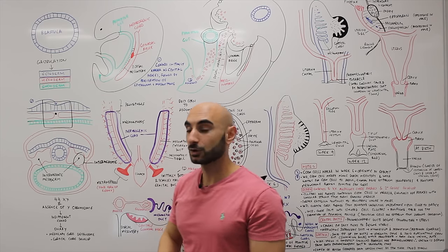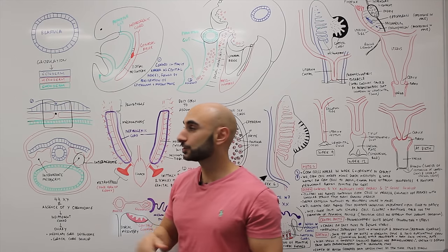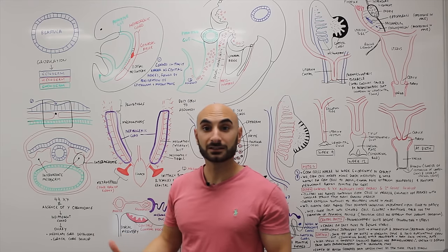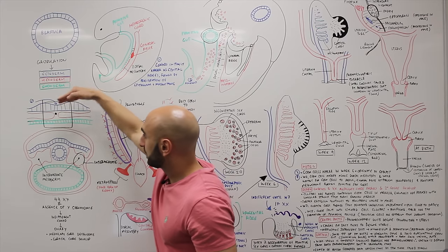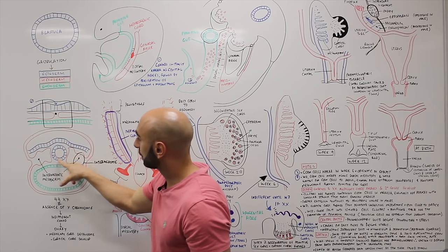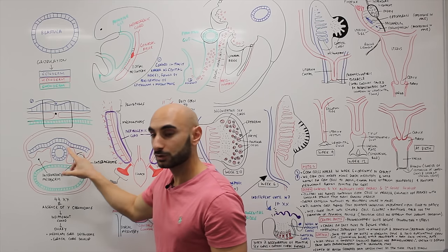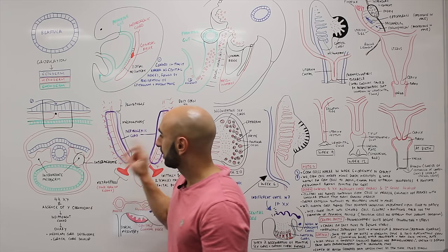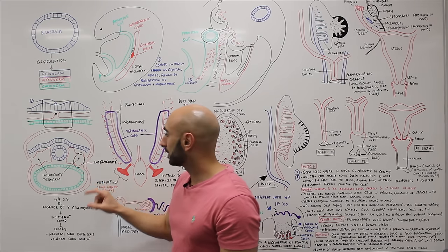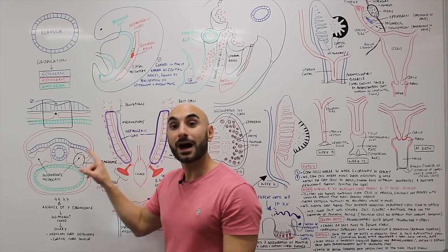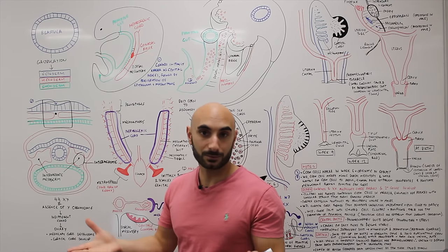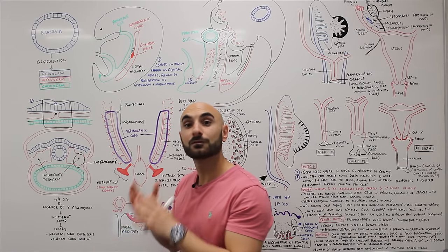In blue we have the ectoderm, which becomes skin and nervous tissue. In red we have the mesoderm, and in green we have the endoderm, which will become your gut tube. You can see that the neural tube has pinched off the ectoderm and is surrounded by mesoderm. The mesoderm is the focus of today's video, because the middle part of the mesoderm is where the female reproductive system comes from, as well as the kidneys and the male reproductive system.